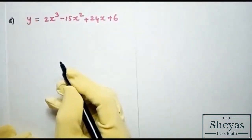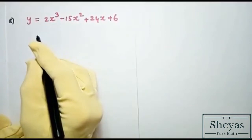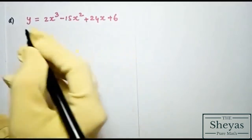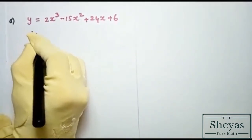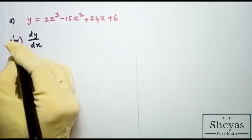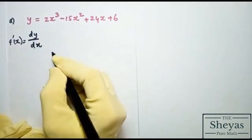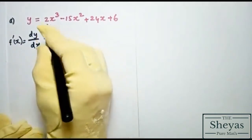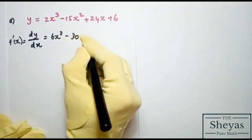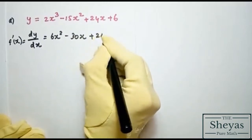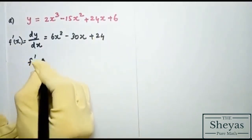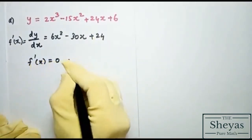For part a, the given function is y = 2x³ − 15x² + 24x + 6. The first step is to find the first derivative: dy/dx = 6x² − 30x + 24.